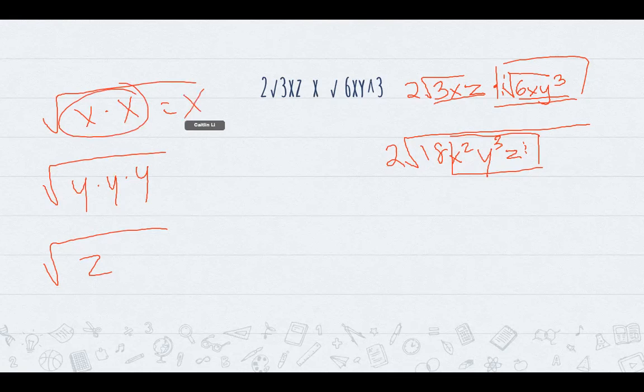So if we combined both of our x it just will equal to one x. That is like our perfect square. Same with our y's except we have one left over. And same with our z, we can't combine it with any other z's because there's no other z. We just have one left.